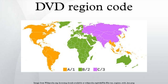So-called region 0 and all-region discs are meant to be playable worldwide. The term region 0 also describes DVD players designed or modified to incorporate regions 1 through 6, thereby providing compatibility with most discs regardless of region. This apparent solution was popular in the early days of the DVD format, but studios quickly responded by adjusting discs to refuse to play in such machines. This system is known as Regional Coding Enhancement.